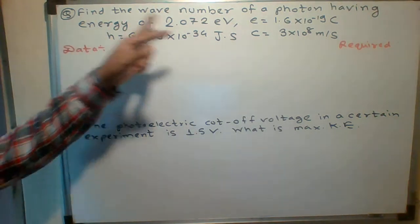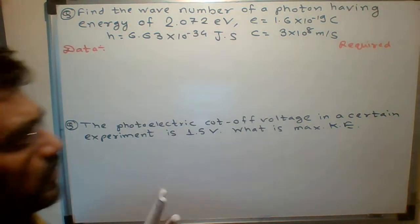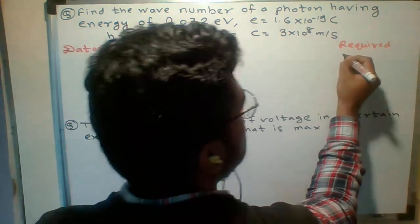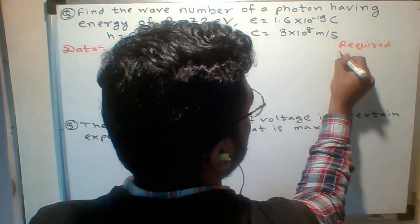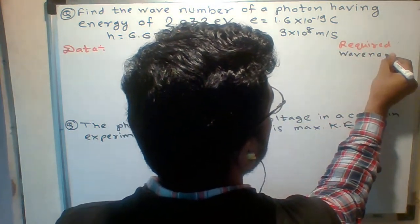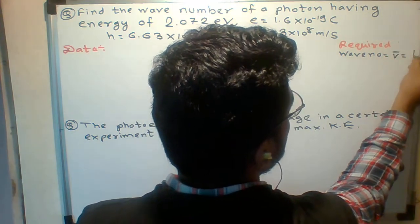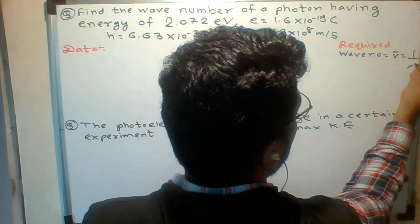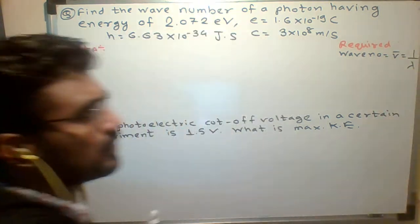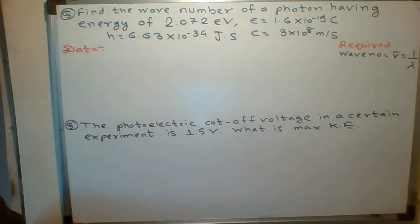The first question is: find the wave number. What is wave number? Wave number is given by the reciprocal of wavelength. I already told you this in the structure of atoms and nuclei chapter.